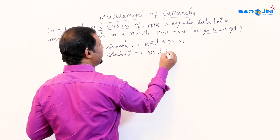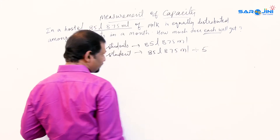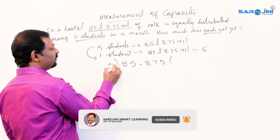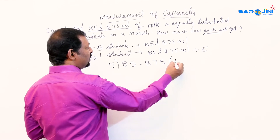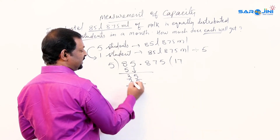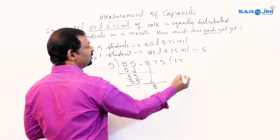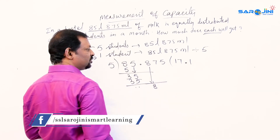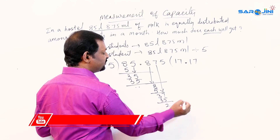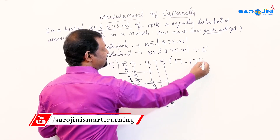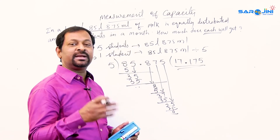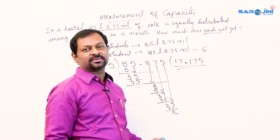So 85 liters 875 milliliters is divided by 5. We can write it as 85.875 divided by 5. Working through the division: 5 into 8 once with 3 remainder, bring down 5 to get 35, 35 divided by 5 is 7, bring down 8, 5 into 8 once with 3 remainder, bring down 7, 35 divided by 5 is 7, then 5 into 5 is 1. Each student gets 17 liters 175 milliliters of milk per month.